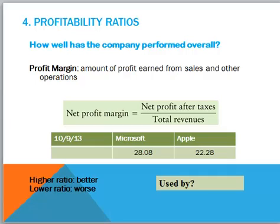Microsoft's profit margin is higher — it's better. You would see, for example in the grocery industry, profit margins are pretty slim — maybe 2%, maybe 5%. So it really depends on the industry. As another example, Boeing, a manufacturer most recently of the Dreamliner, had a profit margin of about 5%, substantially different than Microsoft and Apple as technology companies.